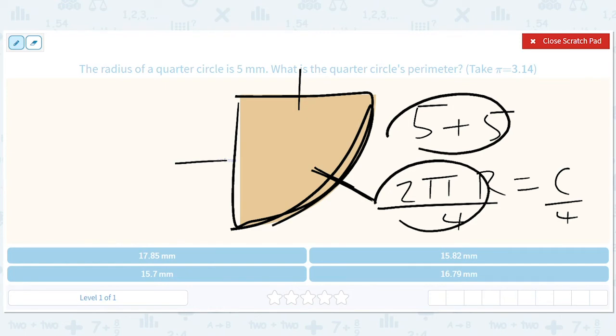Okay, so r is 5. So 2 times r is 10. So it's 10 pi divided by 4. So this is going to equal 10 times 3.14 is 31.4 divided by 4.